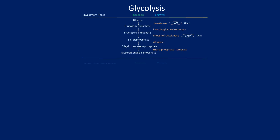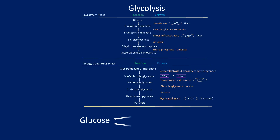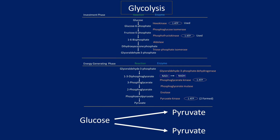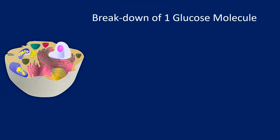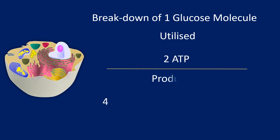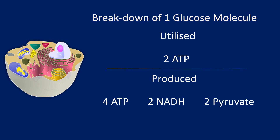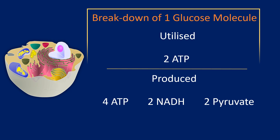Glycolysis is the metabolic pathway in which glucose is broken down into two molecules of pyruvate, and is far more complex than the creatine phosphate metabolism, as it requires a number of enzymatic reactions. Glycolysis takes place in the cytosol of cells, and during this process, two ATP molecules are utilized, and four ATP, two NADH, and two pyruvate molecules are produced. The pyruvate can subsequently be used in the citric acid cycle, or serve as a precursor for other reactions, while NADH is taken to the electron transport chain.